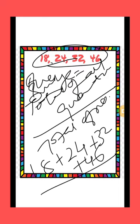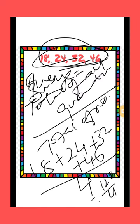1, 2, 3, 4 — there are a total of 4 quantities. So we will divide it by 4. 18 plus 24 plus 32 plus 46 is equal to 120, divided by 4, and it is equal to 30.